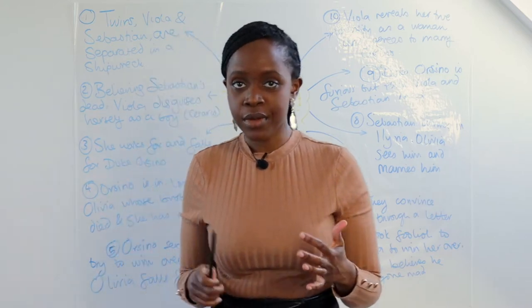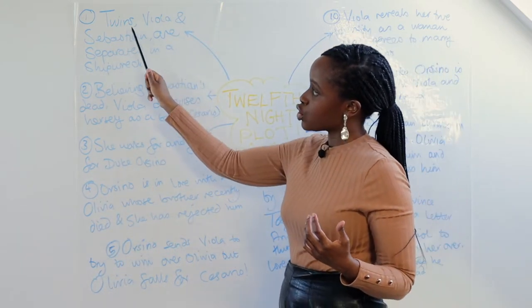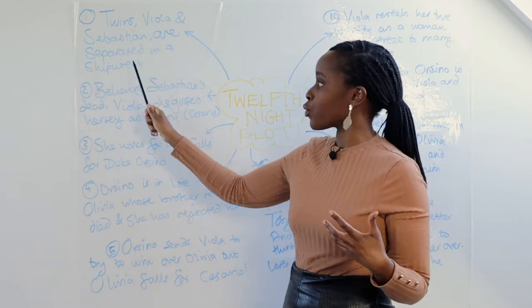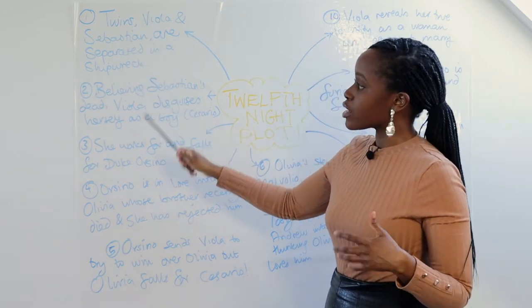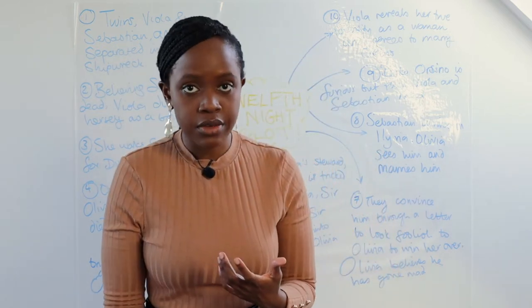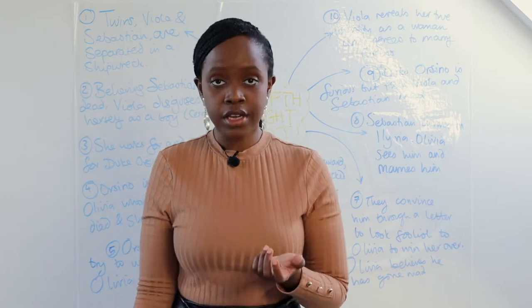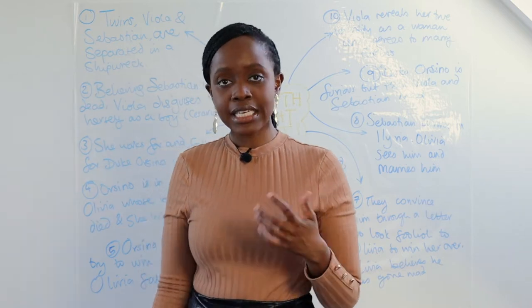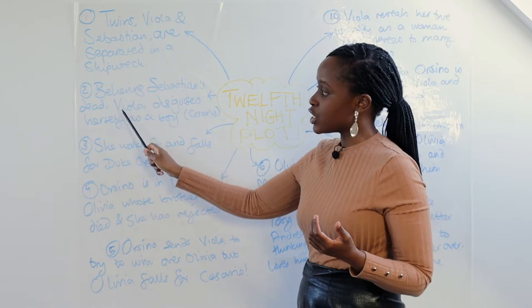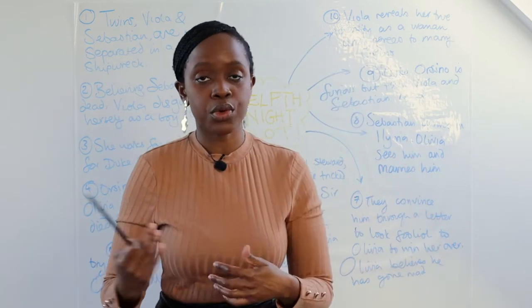The play begins with us learning about two twins: Viola and Sebastian. Viola is a girl and Sebastian is a boy. They are separated in a shipwreck, and Viola seems to be the only survivor. She believes that her twin brother has been killed in the shipwreck.